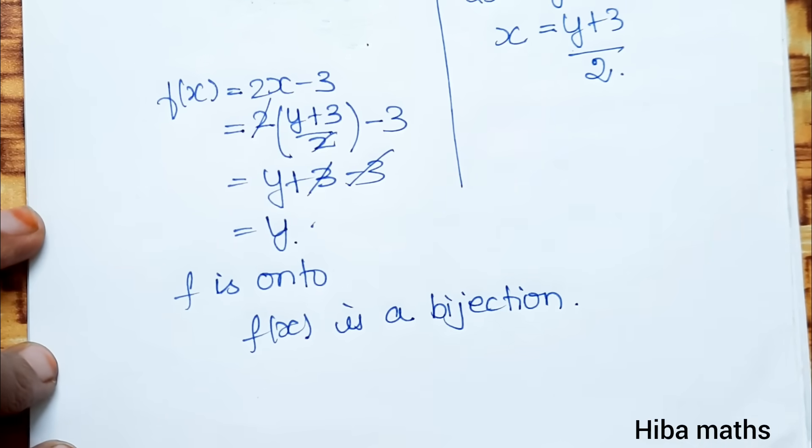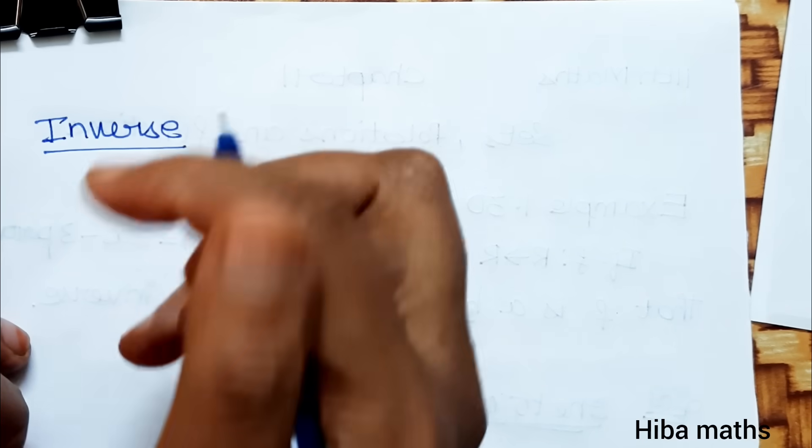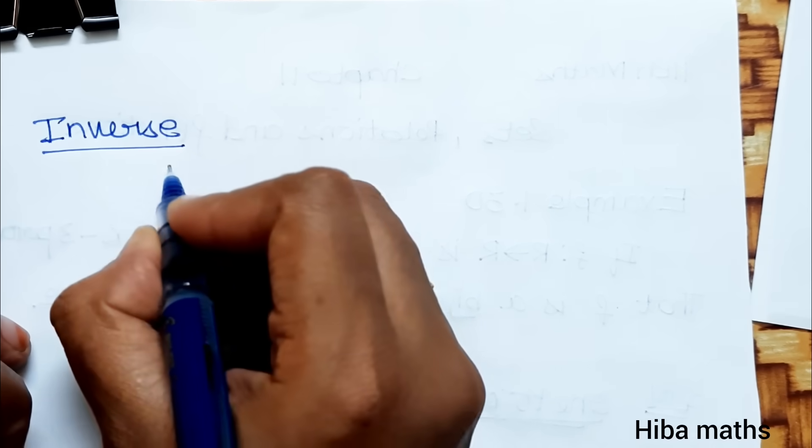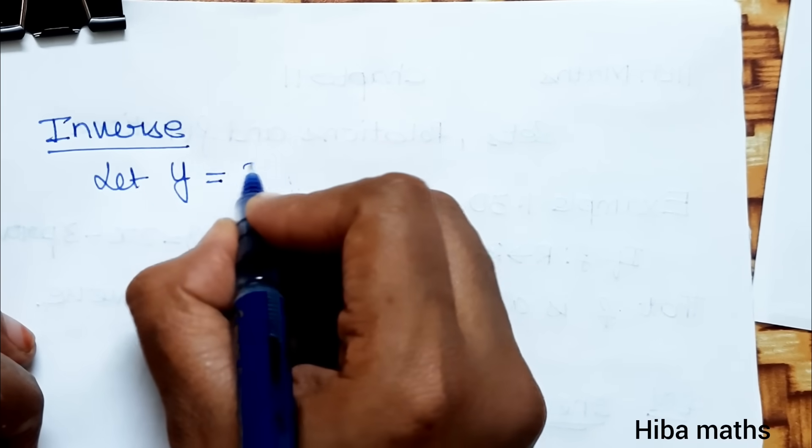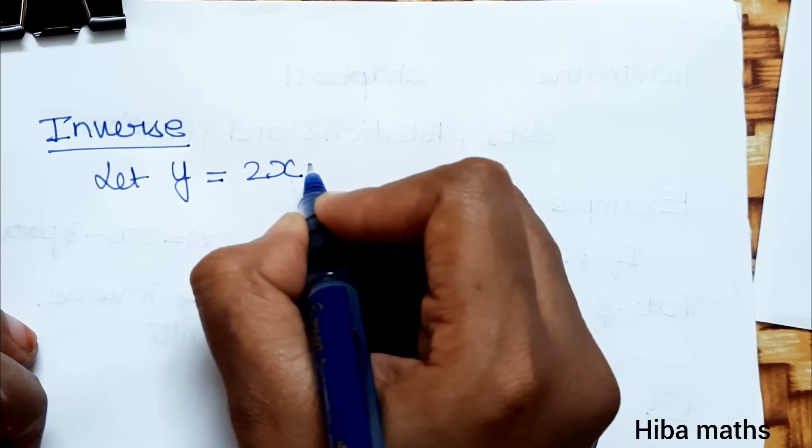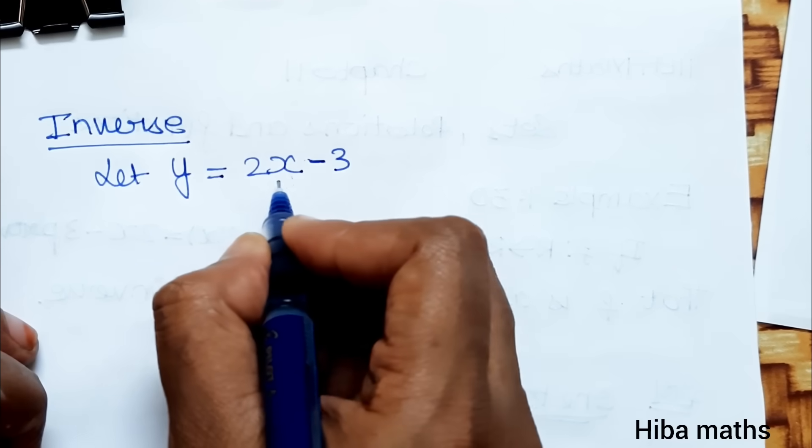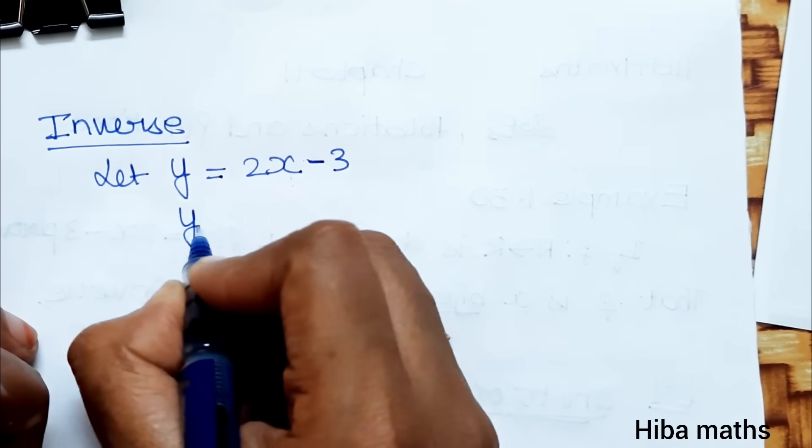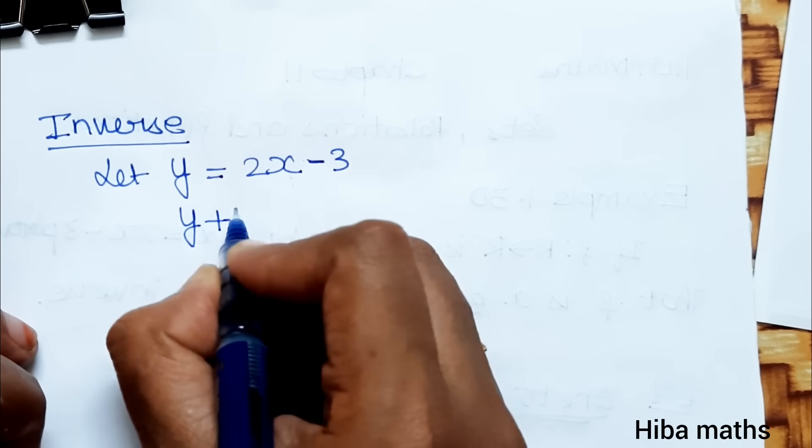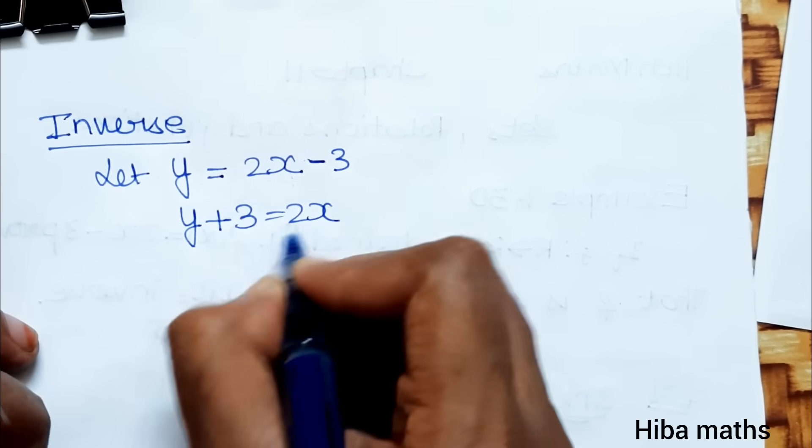Now we find the inverse. Let y = 2x - 3. Solve for x. 2x = y + 3. So x = (y+3)/2.